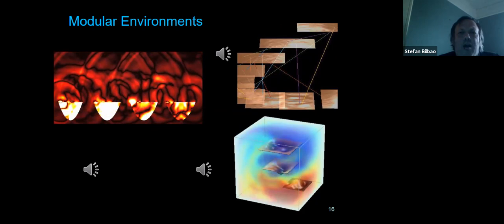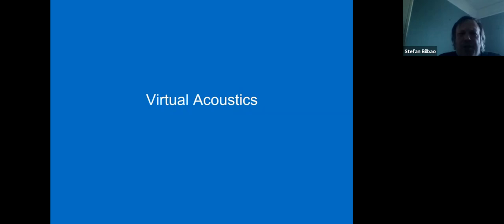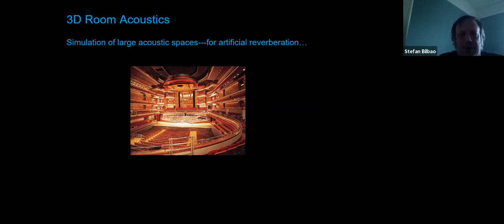Moving to virtual acoustics: here the aim is different. We have audio coming in and we want to simulate the effect of a room on the sound to produce a reverberated output. In general we're solving some variant of the 3D wave equation. Algorithmically these are simpler than some of the things shown earlier, but it's the size of the problem that makes it difficult. The wave equation itself isn't particularly hard to solve—it's the raw number of operations and the amount of memory required.